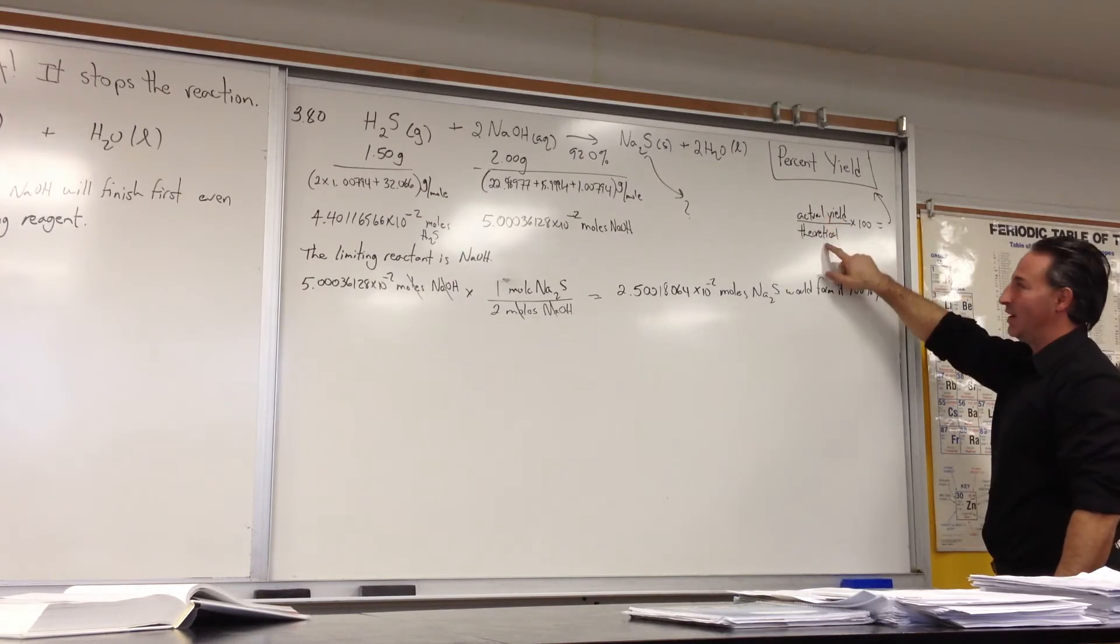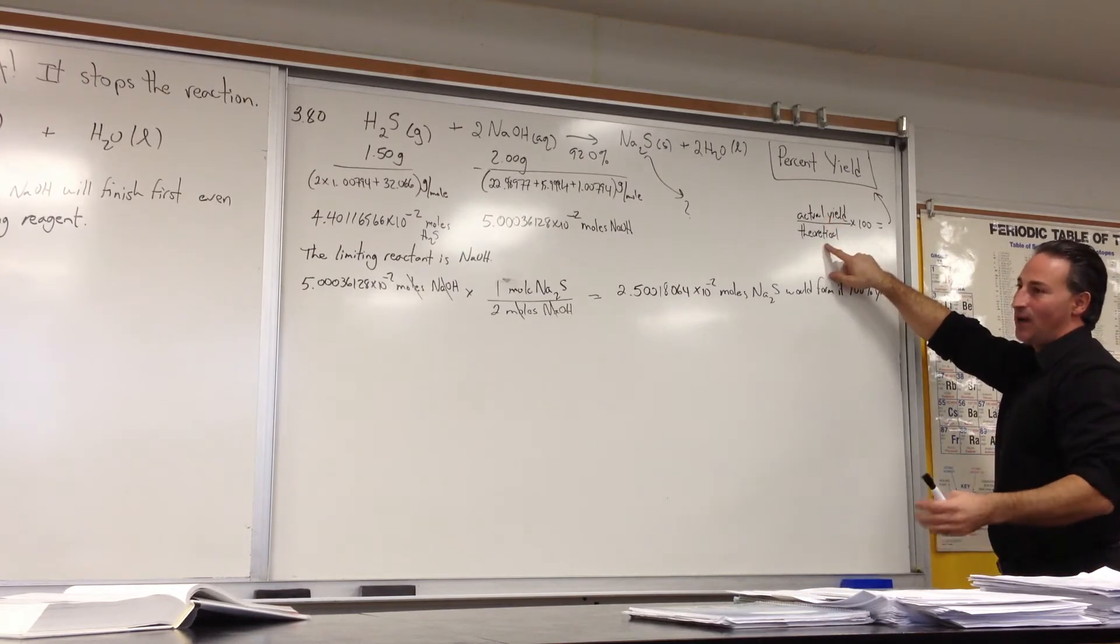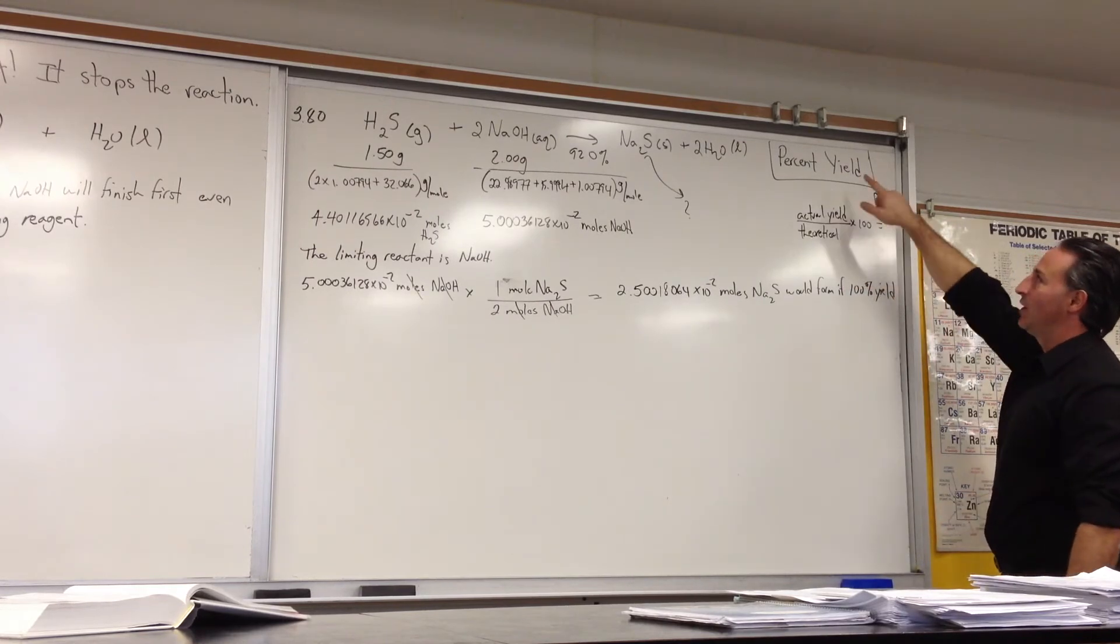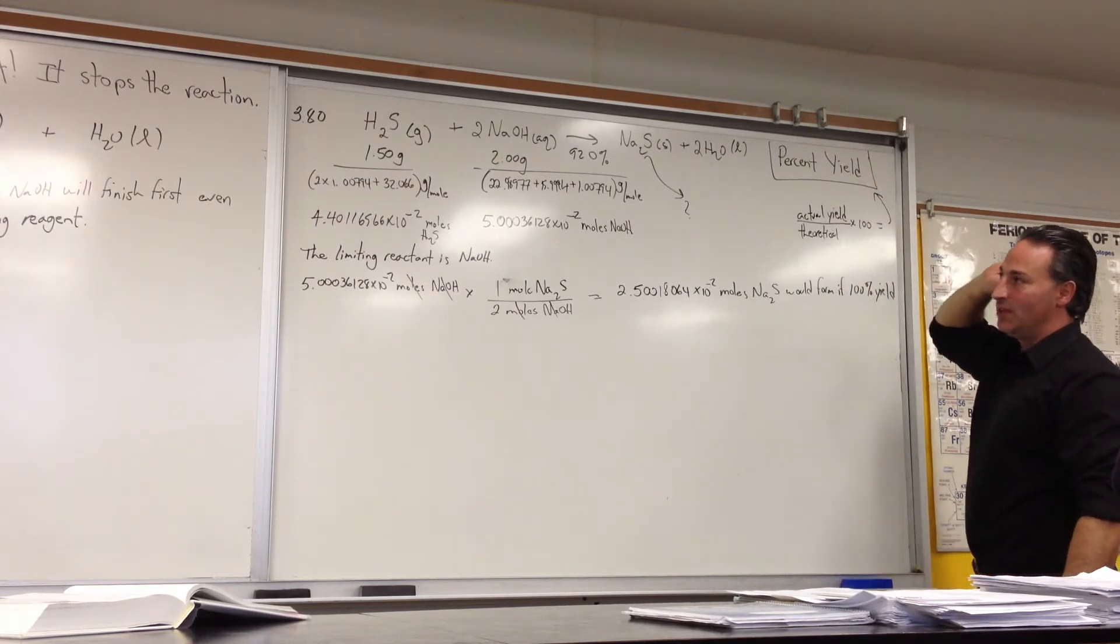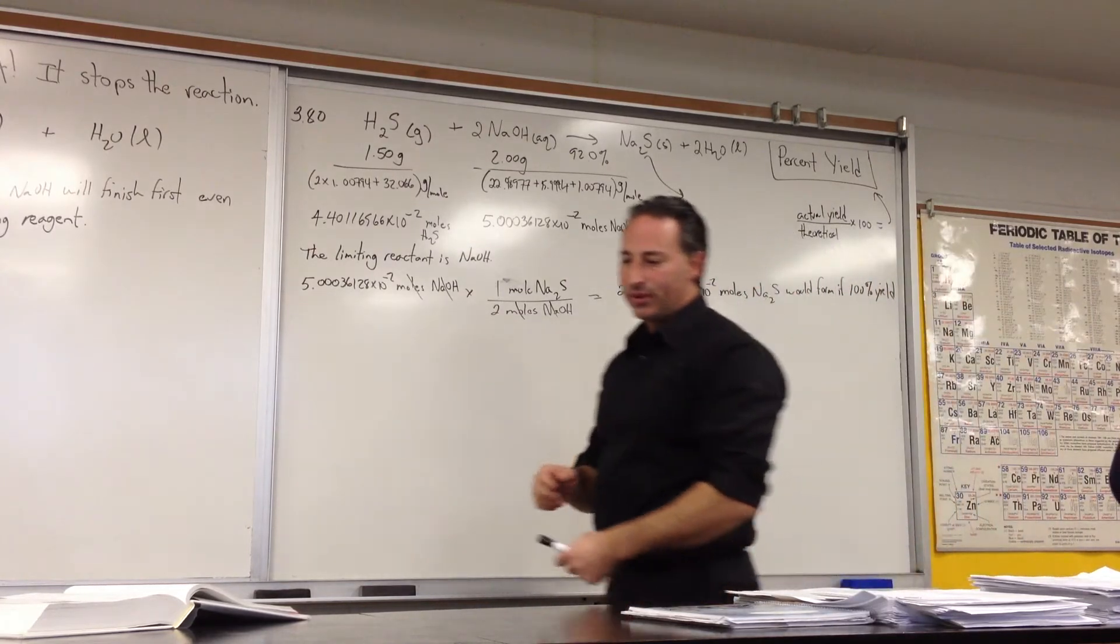When you divide what you actually get by what you could have gotten if the reaction had proceeded 100%, and you multiply it by 100, you get what's called the percent yield. And the truth is that in real-world chemical reactions, you don't always get 100% yield.